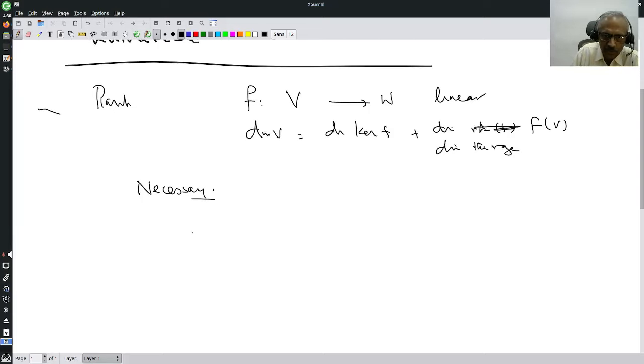Suppose I am given K, a subspace of V, and some W1, which is a subspace of W, such that dimension of V equals dimension of K plus dimension of W1, then there exists...